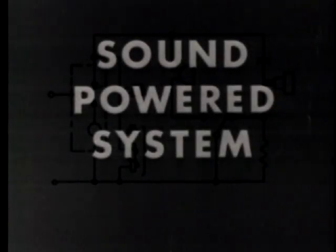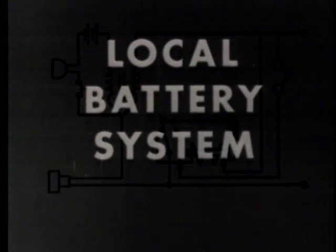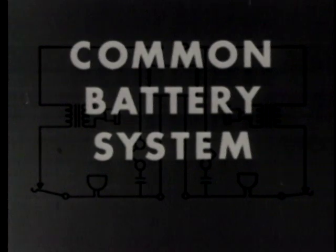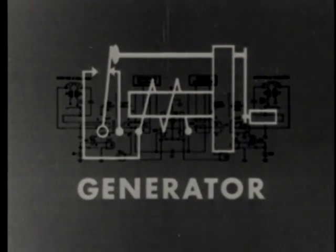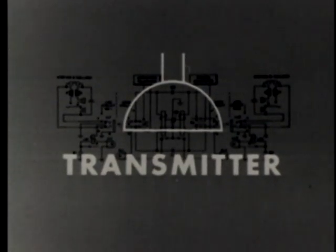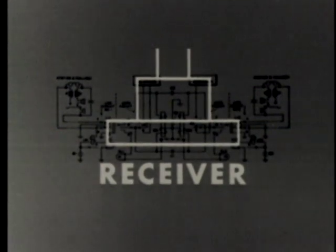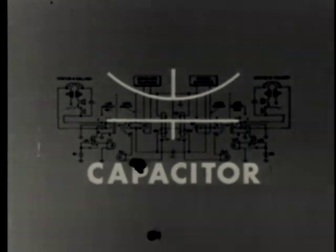You will see in this film how three fundamental systems use six basic components in the creation and regulation of the vital currents in the telephone line. You will see how the sound powered system, the local battery system, and the common battery system utilize generators, ringers, transmitters, receivers, induction coils, and capacitors to carry the sound of our voice over two simple wires.